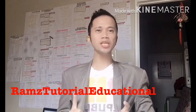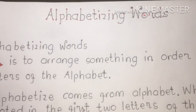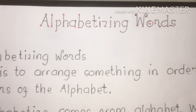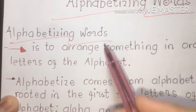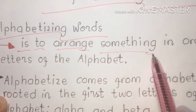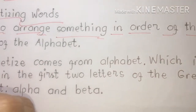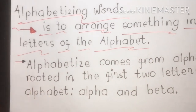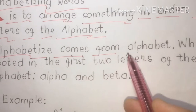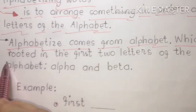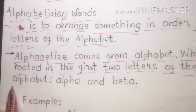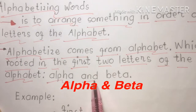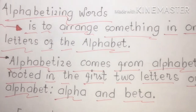Hello everyone, good morning and welcome to Ram's Tutorial Educational Channel. Today we're going to discuss alphabetizing words. Alphabetizing words means to arrange something in order of the letters of the alphabet. The word 'alphabetize' comes from 'alphabet,' which is rooted in the first two letters of the Greek alphabet: alpha and beta.